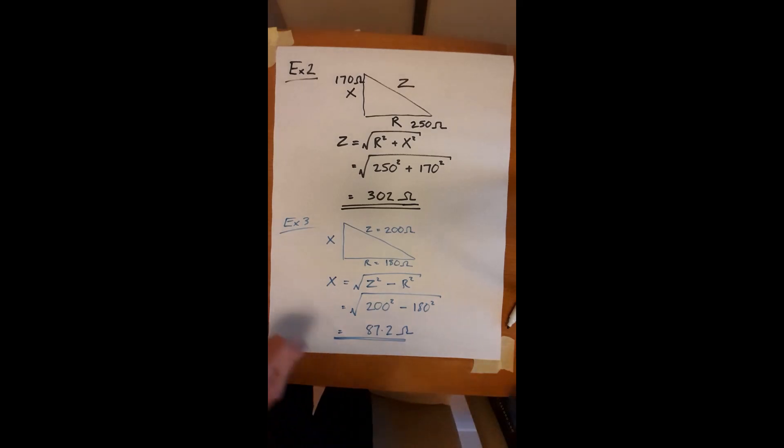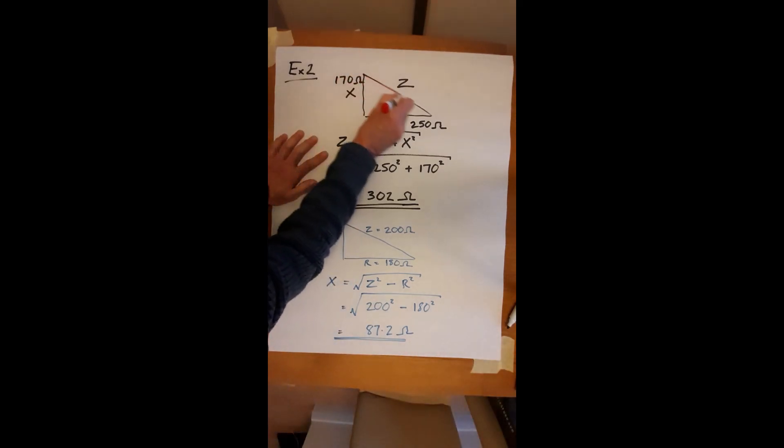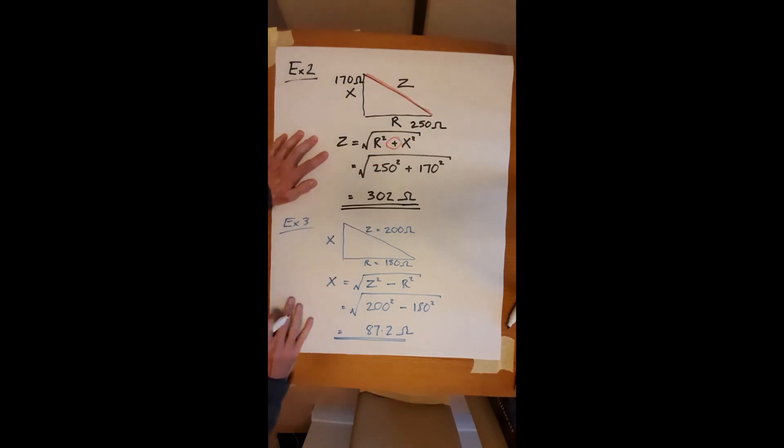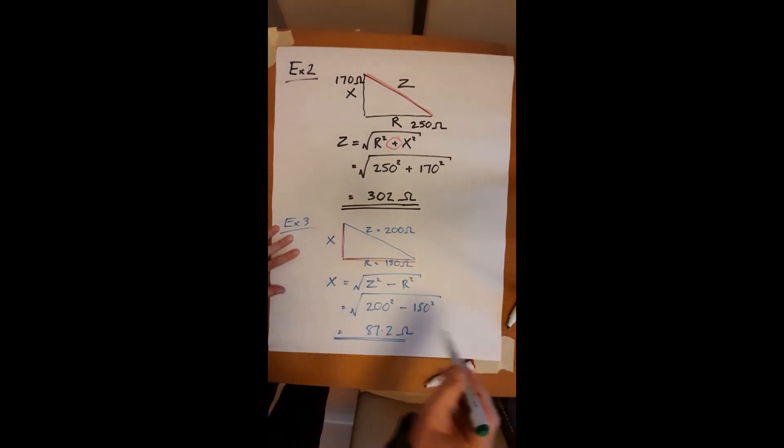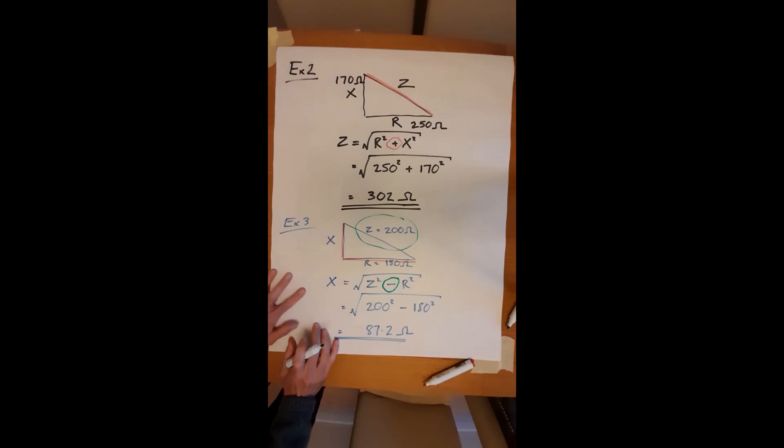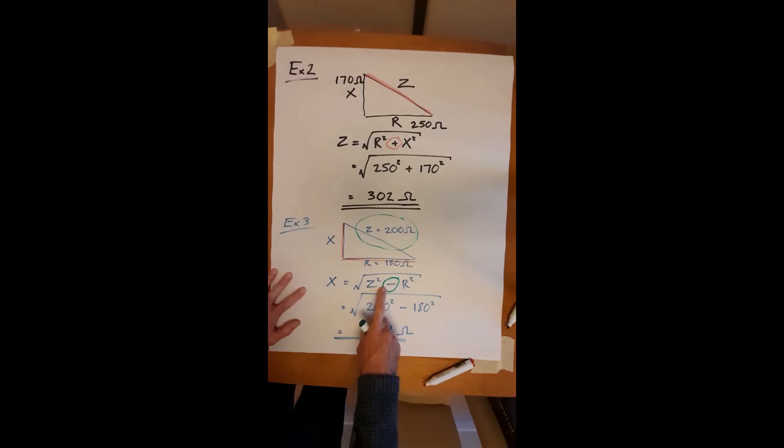So just to summarize that bit, this is really important. If we're finding the longest side, the hypotenuse, a plus goes in that formula. If we are finding one of the shortest sides, either of these two, and you're given the longest side, then a minus goes into the formula. And you must start with the bigger number. If you do these the other way around, you'll get a syntax error on your calculator because technically you can't have the square root of a negative number.